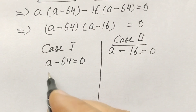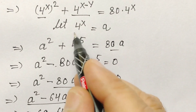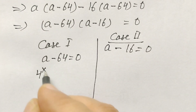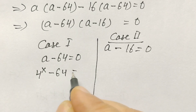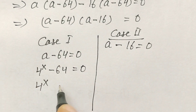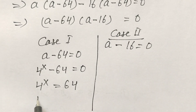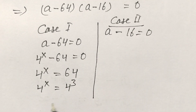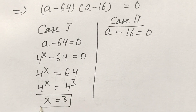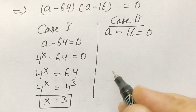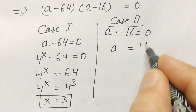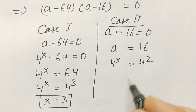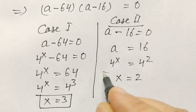Since we assumed a equals 4 to the power x: in case one, 4 to the power x minus 64 equals 0, so 4 to the power x equals 64 equals 4 cubed, therefore x equals 3. In case two, a equals 16, so 4 to the power x equals 4 squared, therefore x equals 2.